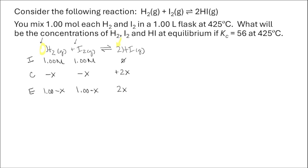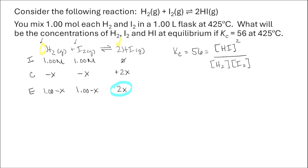Now we can plug these equilibrium concentrations into our equilibrium constant expression. When we write a Kc expression, we look at the concentrations of products raised to the power of their stoichiometric coefficients divided by the concentration of reactants raised to their stoichiometric coefficients. So the equilibrium constant, 56, equals the concentration of HI squared, divided by the concentration of H2 and the concentration of I2. The stoichiometric coefficients of both H2 and I2 are 1.